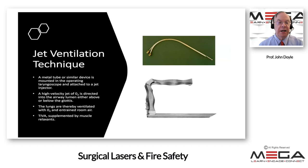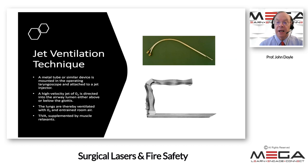More commonly, a jet ventilation technique is used. A metal tube or similar device is mounted on the operating laryngoscope and attached to a jet ventilator or injector. A high-velocity jet of oxygen is directed into the airway lumen either above or below the glottis depending on circumstances, and room air is entrained as well. This is typically done using propofol plus remifentanil supplemented by a muscle relaxant such as rocuronium. In some cases it can be difficult to know how well you are ventilating.